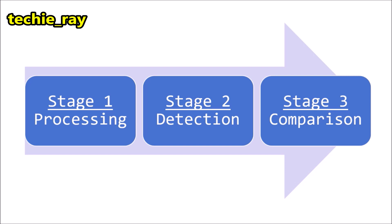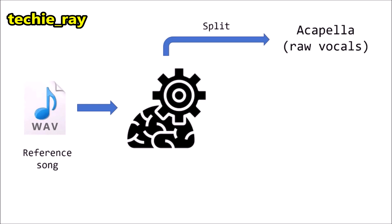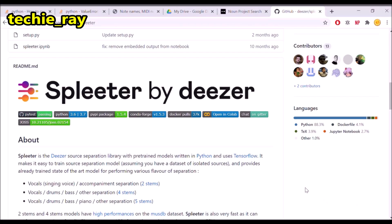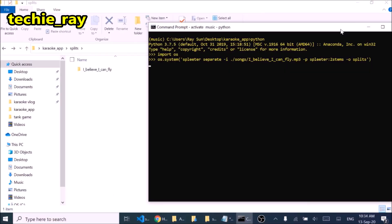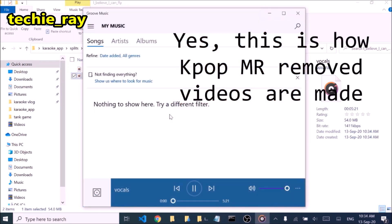Let's start with the backend algorithm which goes through three stages. Stage 1 is processing. Here, the algorithm takes in an audio file as the input — this audio file is a song to which we'll be singing, let's call it the reference song. The algorithm then breaks down the reference song into an acapella version and an instrumental version. I used a library called Splitter to do this. The acapella version will be the basis for the vocal analysis, while the instrumental version will be what the user listens and sings to.